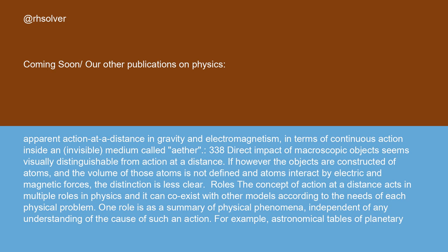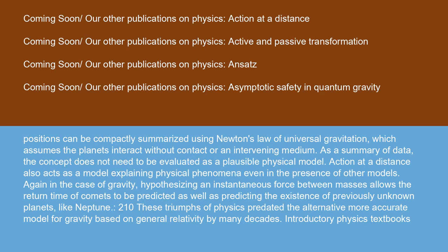Roles: The concept of action at a distance acts in multiple roles in physics, and it can coexist with other models according to the needs of each physical problem. One role is as a summary of physical phenomena, independent of any understanding of the cause of such an action. For example, astronomical tables of planetary positions can be compactly summarized using Newton's law of universal gravitation, which assumes the planets interact without contact or an intervening medium. As a summary of data, the concept does not need to be evaluated as a plausible physical model.